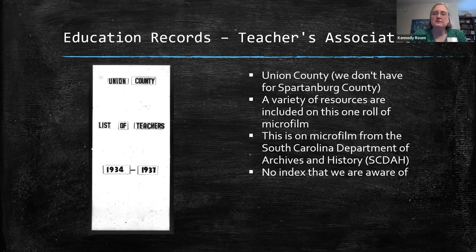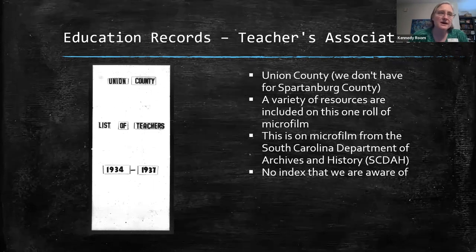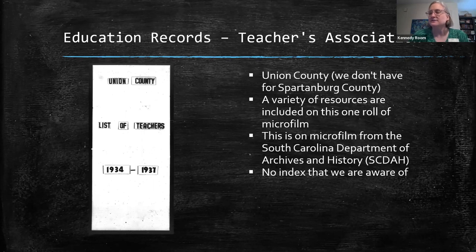Another place to check for teachers would be teachers associations. This is a Union County record because we don't have the Spartanburg County Teachers Association records. This particular part covers 1934 to 1937, though there are a number of chunks of records covering various time periods on this roll of microfilm, and a variety of resources included on the one roll. This microfilm is from the South Carolina Department of Archives and History, so there may be other counties from which they have collected this information.